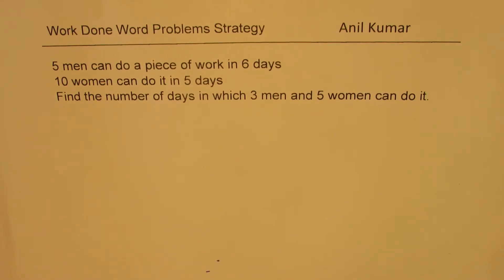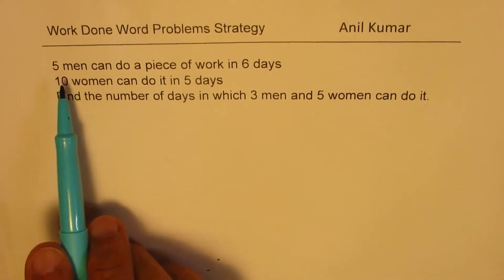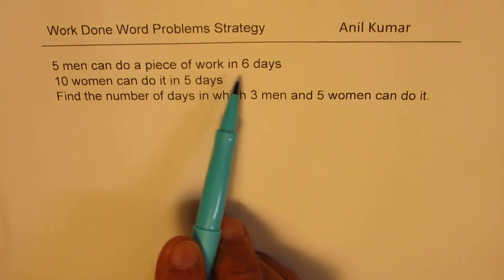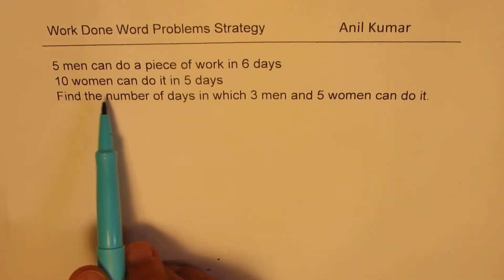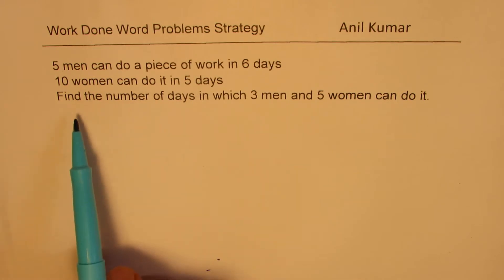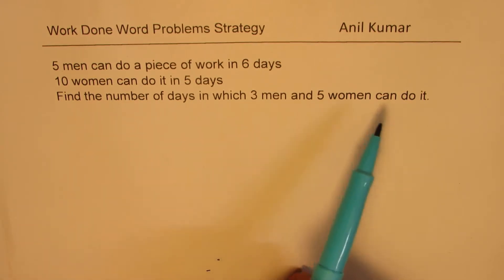I'm Anil Kumar. Welcome to my series on work done related problems. We'll discuss a strategy to solve all such examples, starting with a very basic question, which is five men can do a piece of work in six days. Ten women can do it in five days. Find the number of days in which three men and five women can do it.